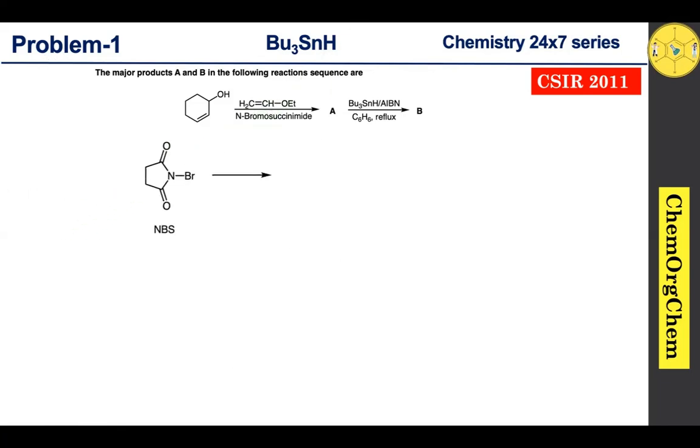Now, ethyl vinyl ether's double bond is electron-rich. This electron-rich pi bond attacks the bromine atom, resulting in the bromine atom attacking this center to produce the corresponding brominium ion.